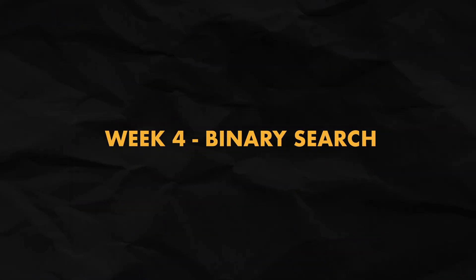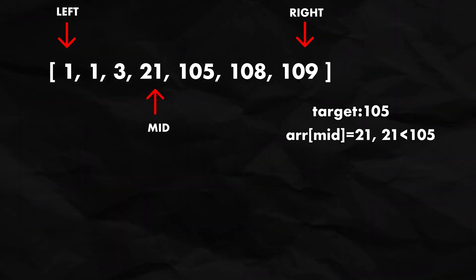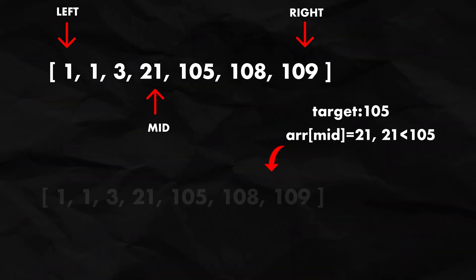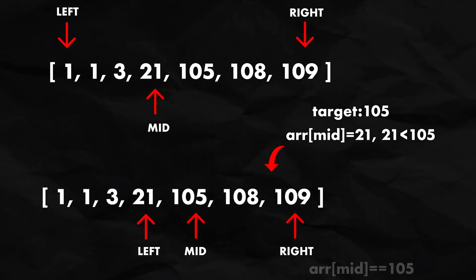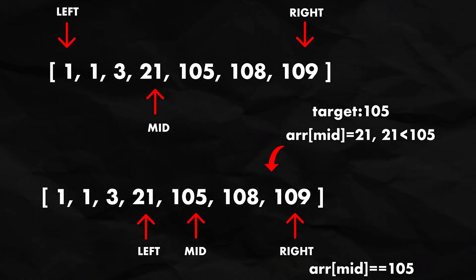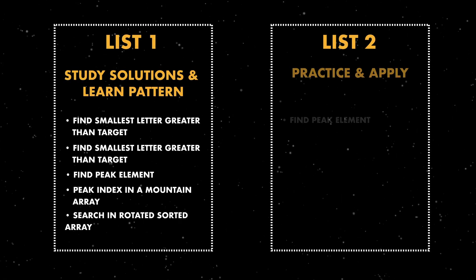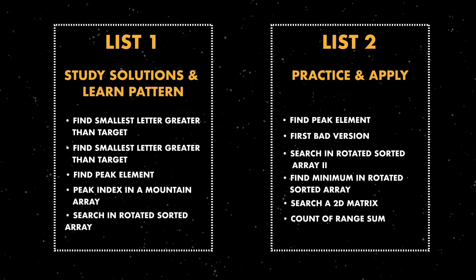Week 4 is binary search. You're using two pointers again, but to track the middle between them and check whether the value in the middle satisfies the condition. Based on that middle value, you update either the left or right pointer, eliminating half the possibilities each iteration — giving us logarithmic time complexity. Most binary search questions don't differ much from one another; it all comes down to determining how you update your left or right pointer after each iteration.